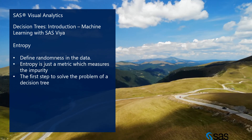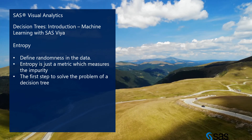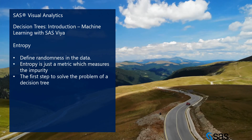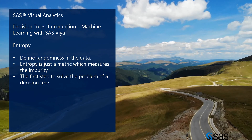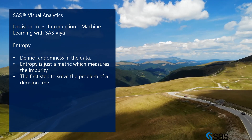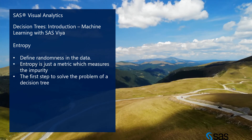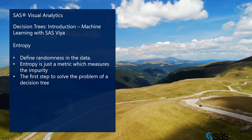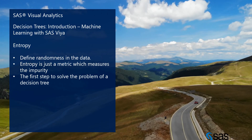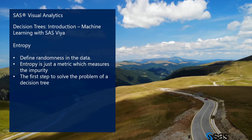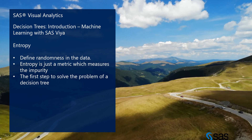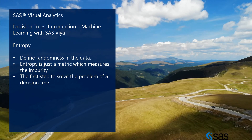In this session we will cover entropy. Entropy is defined as the randomness in the data — it is a metric which measures the impurity. Because we have some random data there is a possibility of impurity in the data. Entropy is just a metric which measures that impurity. The first step to solving the decision tree problem is entropy. More about randomization and handling impurity in data will be covered in further sessions.